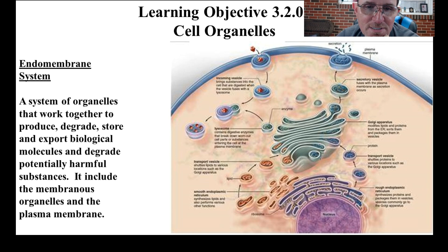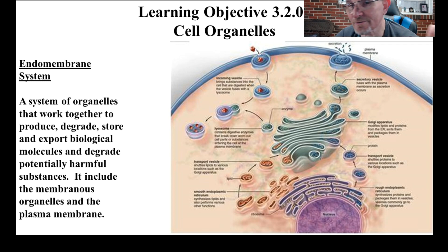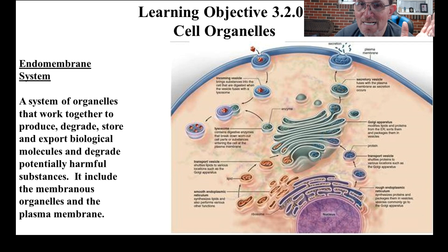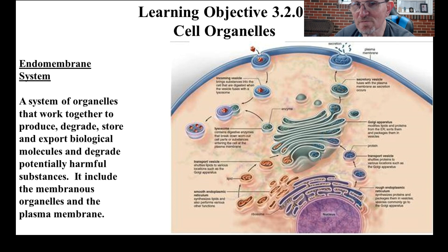Lysosomes contain some really strong chemicals and their function is to break down old and worn-out organelles and other things — they do catabolism on them. Peroxisomes we use to keep toxic oxygen molecules from damaging our cell — free radicals, which most folks have heard of.